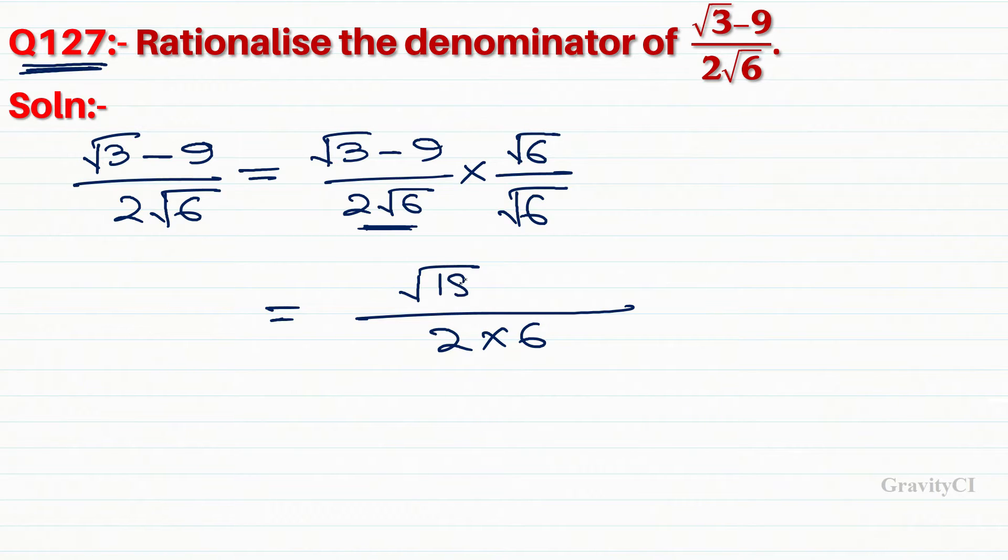This gives √18 minus 9√6 over 12. We take out the factor from 18.